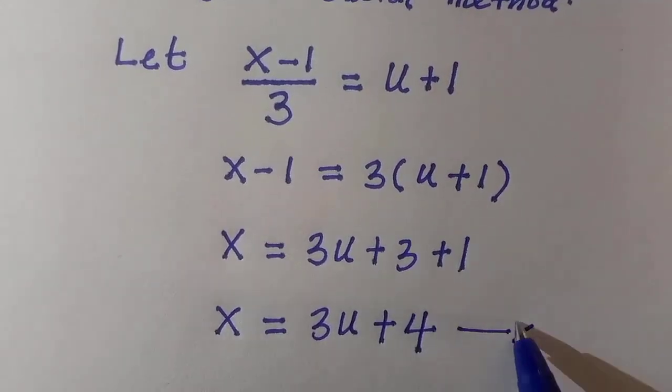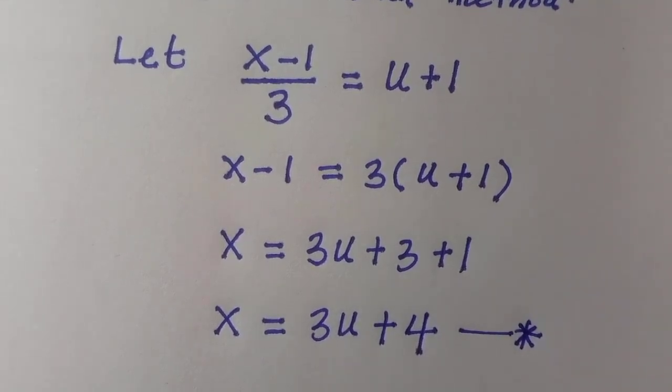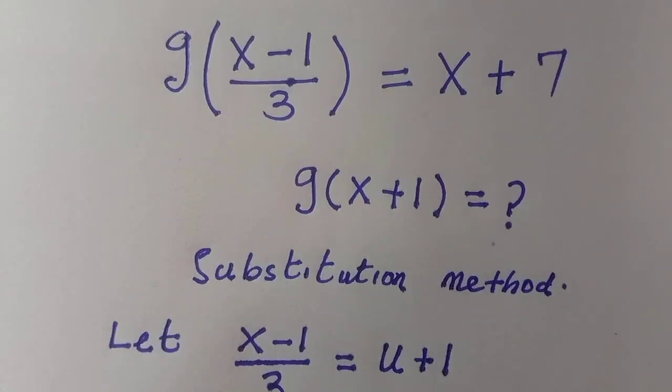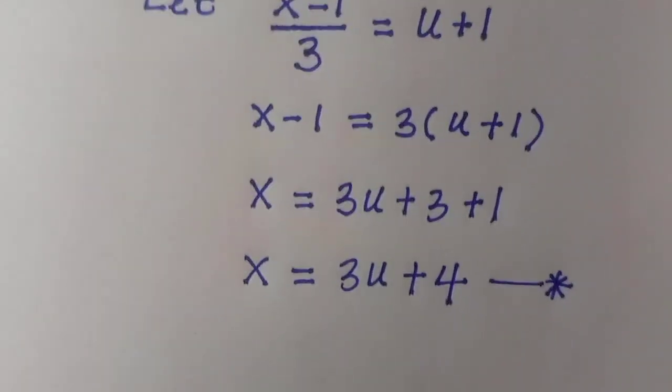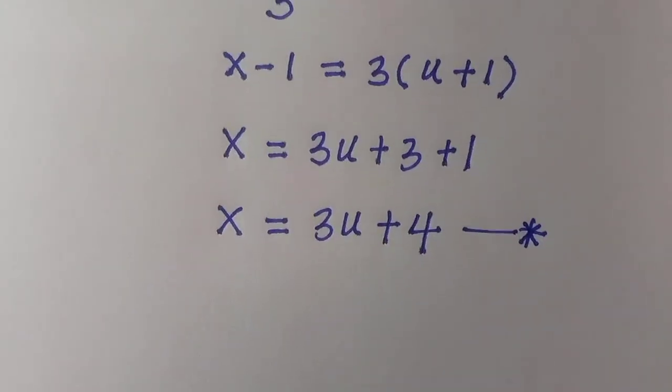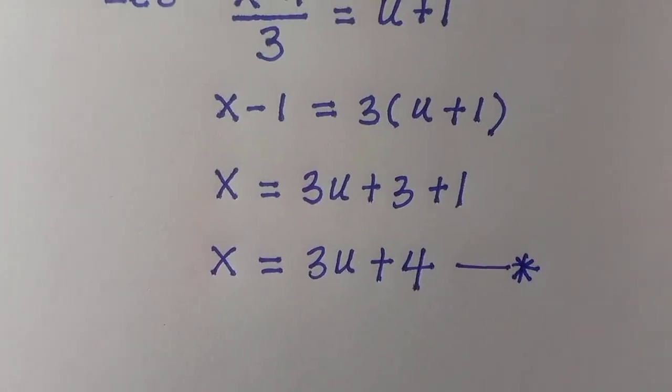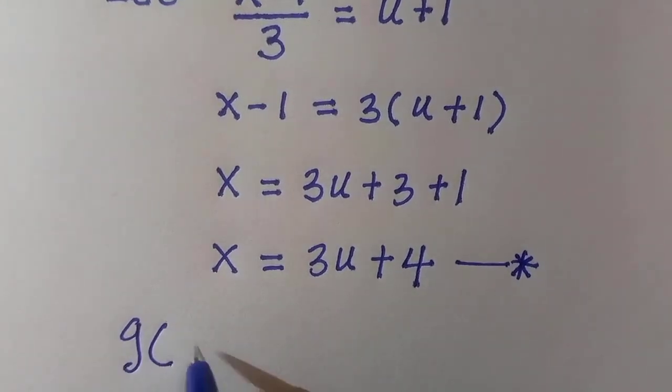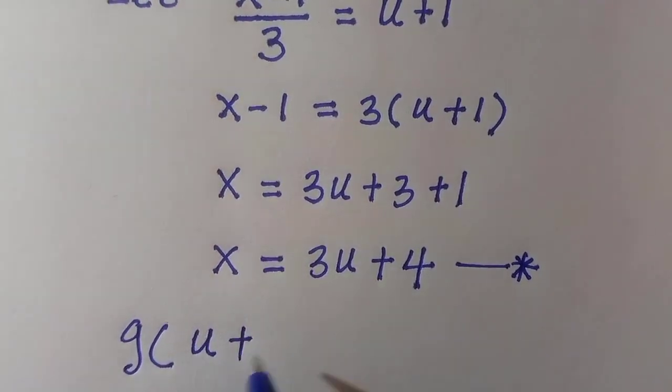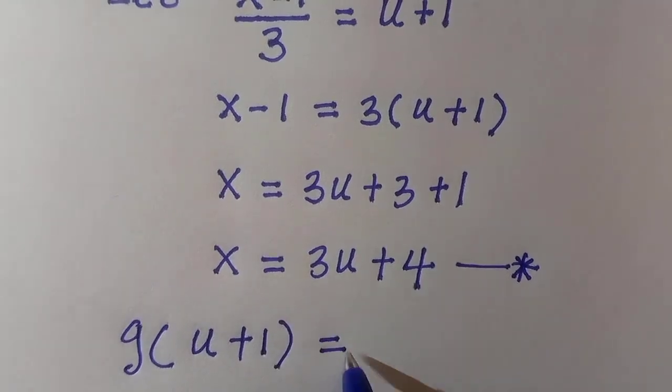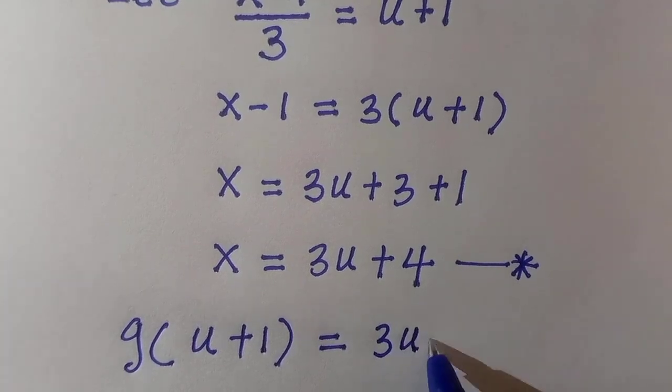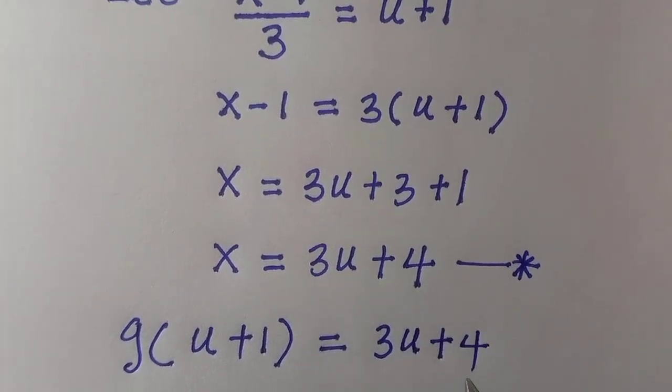On getting the value of x, we start this and we are going to replace it in the initial given problem, which is g of (x-1)/3 equals x plus 7. As we have already let (x-1)/3 equals u plus one, we replace it. Instead of x, we are going to have it as 3u plus 4 plus 7.